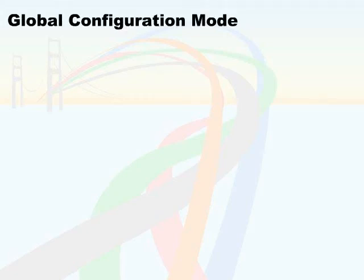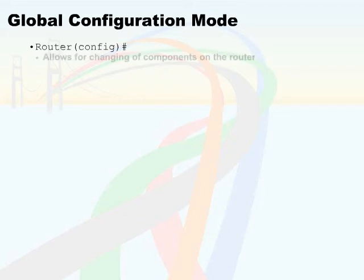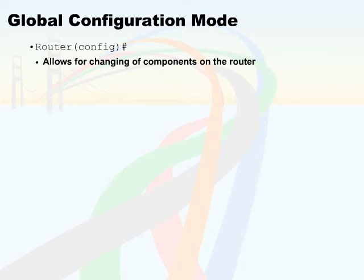The other context that is very important here is to get into the global configuration mode. Global configuration mode is indicated by a prompt which includes the router's hostname plus the word config in parentheses. This indicates that you're now in a mode that will let you change settings. Global configuration mode allows you to change the different components on the router — making global changes like security settings, changing the hostname, and specifying passwords.